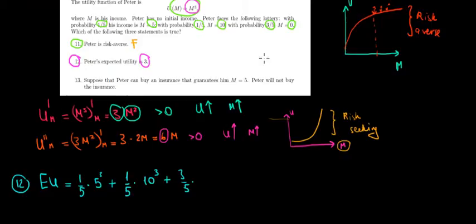an expected utility of 10 to the power of 3. And 3 over 5, an expected utility of 0 to the power of 3. Now, if we solve this, we would get an expected utility of 225 units,